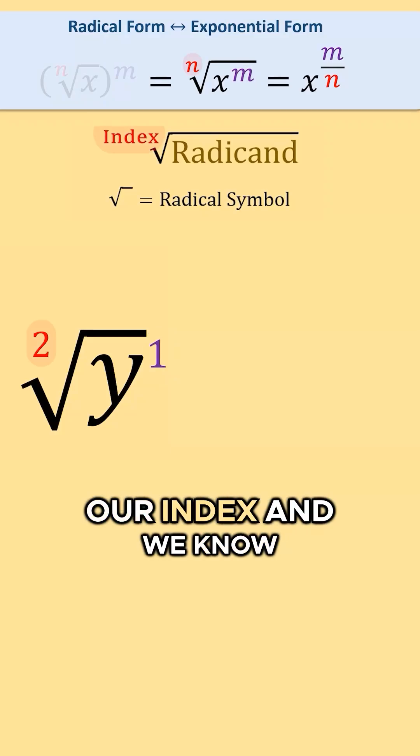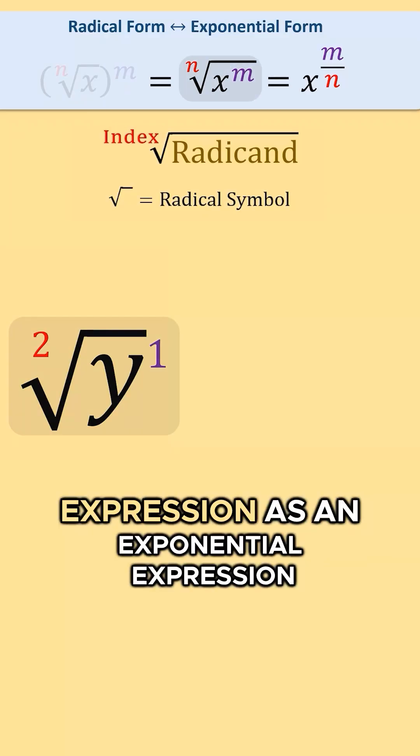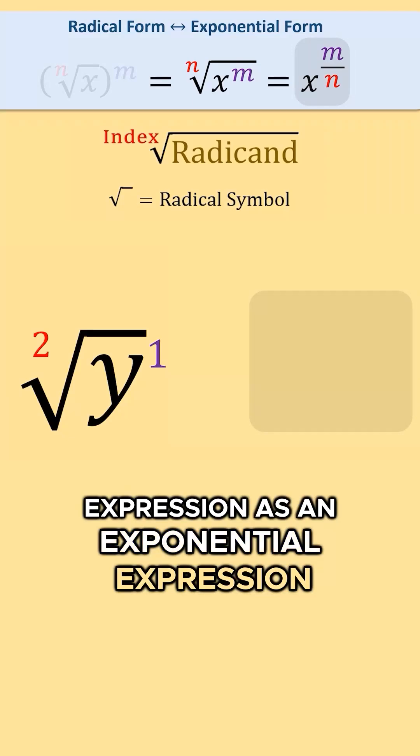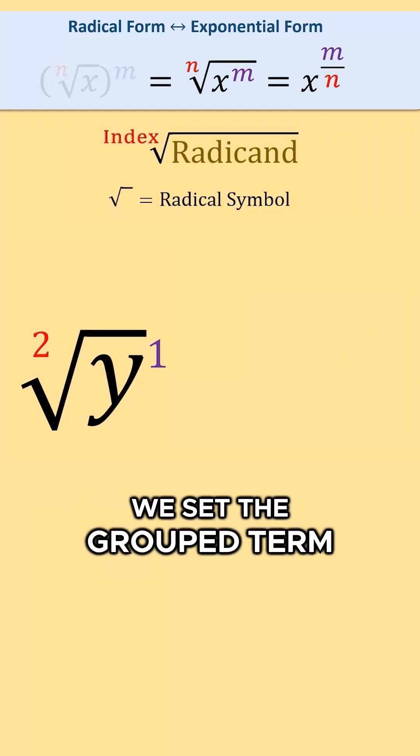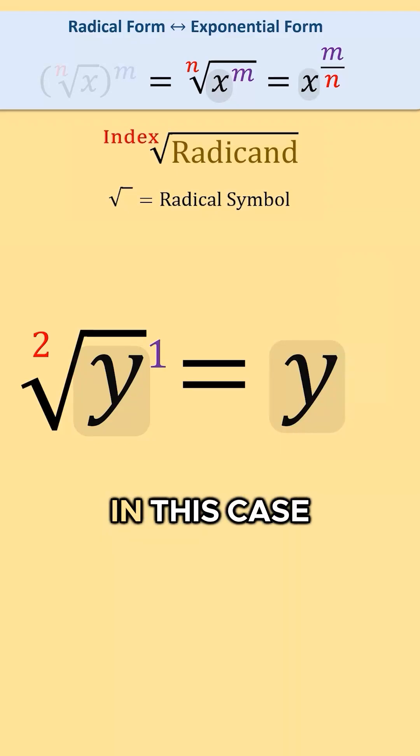Now that we know our index and we know the power of our radicand, we can rewrite the radical expression as an exponential expression. First we set the grouped term raised to a power within a radical symbol as the base of the exponential expression. In this case it will just be y.